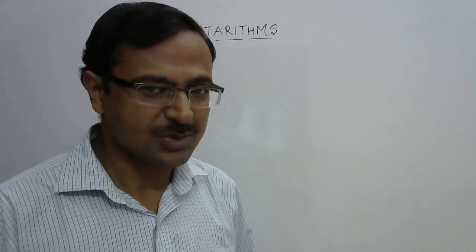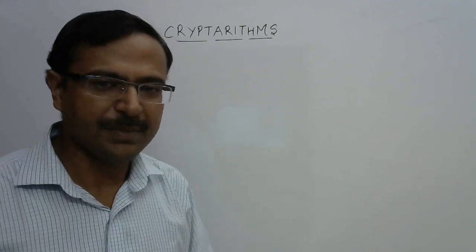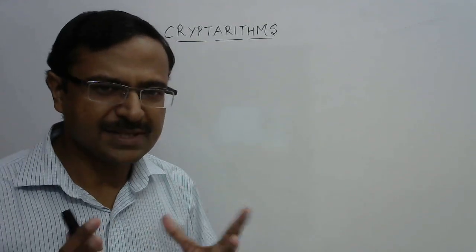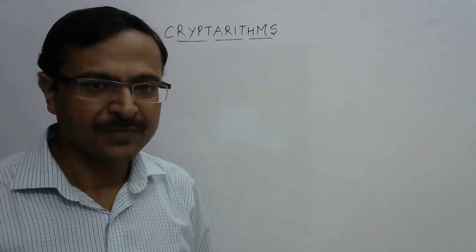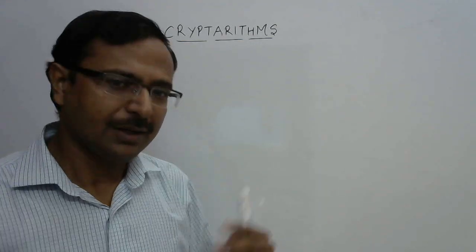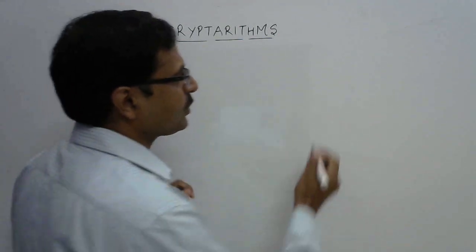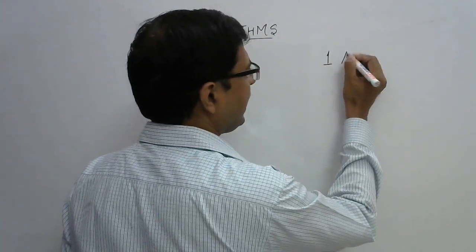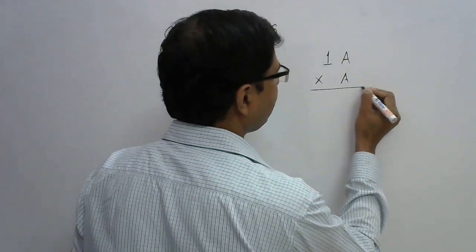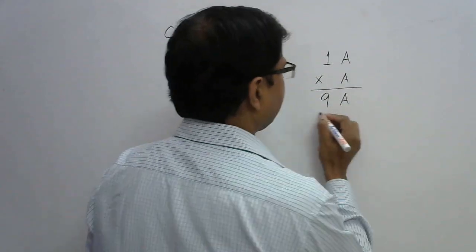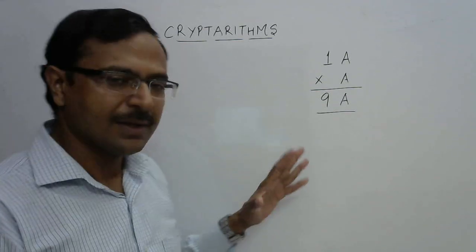Today I'm going to take up one interesting concept in numbers which is known as cryptarithmetic. Cryptarithms are basically puzzles involving numbers in which we have to find some digits or numbers in a given equation or calculation. For example, suppose I write 1a, where a is a single digit number, multiplied by a should give you 9a — we have to find the value of a.